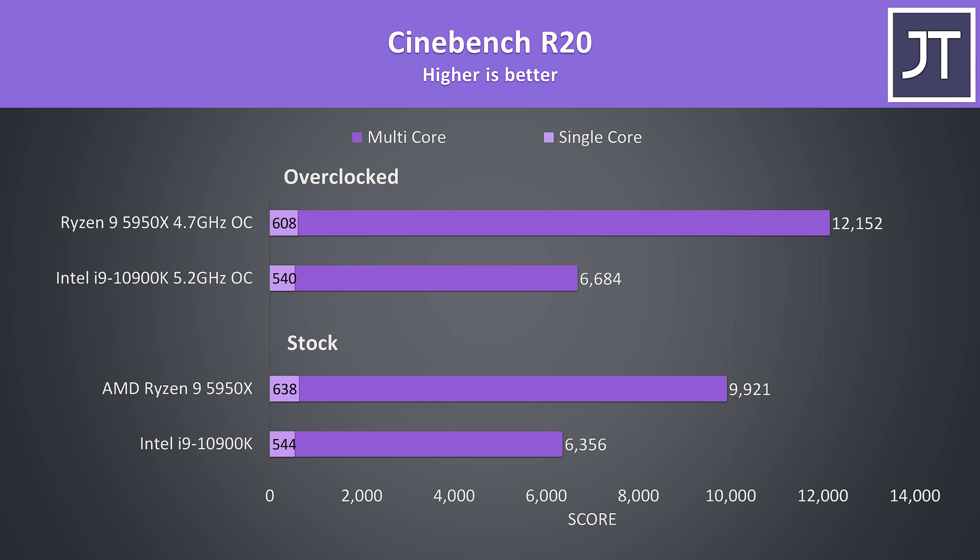Starting with Cinebench R20, I've got the overclocked results towards the top of the graph and the stock results towards the bottom, with the 5950X above the 10900K. In the multicore test the 5950X had a large 56% higher score over the 10900K at stock, or 82% higher when both are overclocked, which is expected owing to it having 6 additional cores. The 5950X was better in single core too — an area where Intel had previously held the lead prior to Zen 3 — scoring 17% higher than the 10900K at stock. With both overclocked, scores actually lower a little because the all core overclock is lower than the single core boost speeds possible at stock.